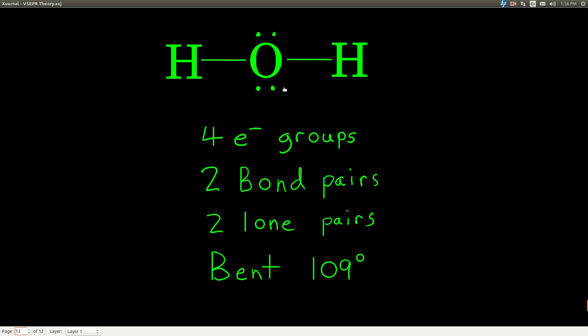Finally, water. The central atom has four electron groups: two are bond pairs and two are lone pairs. That means its molecular geometry or shape is bent, and its bond angle is 109 degrees.